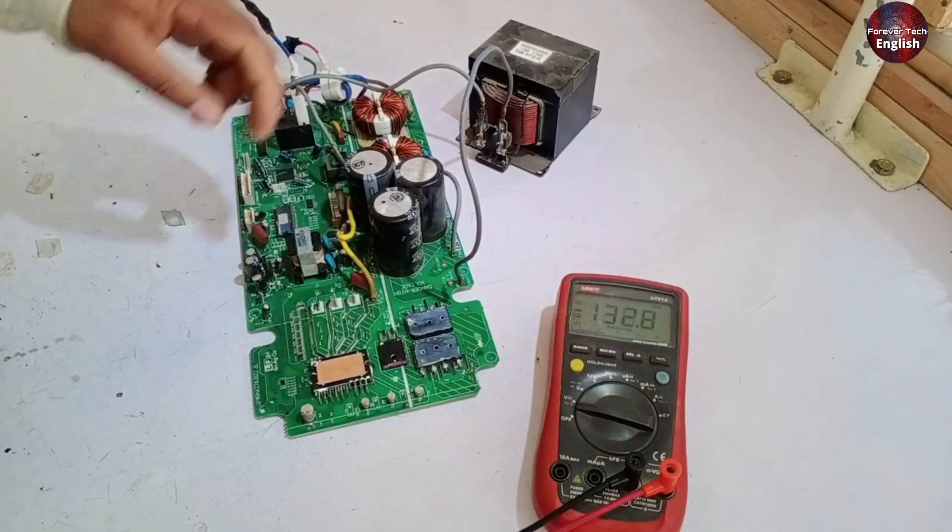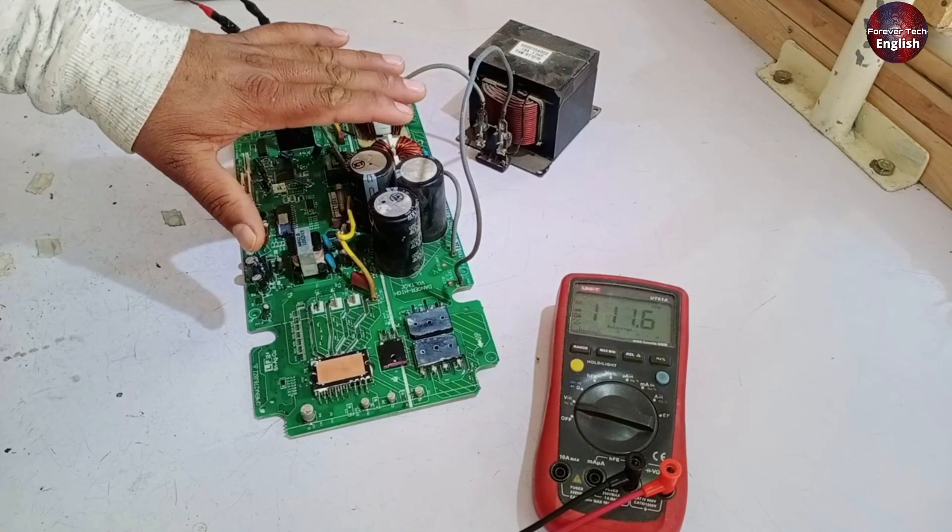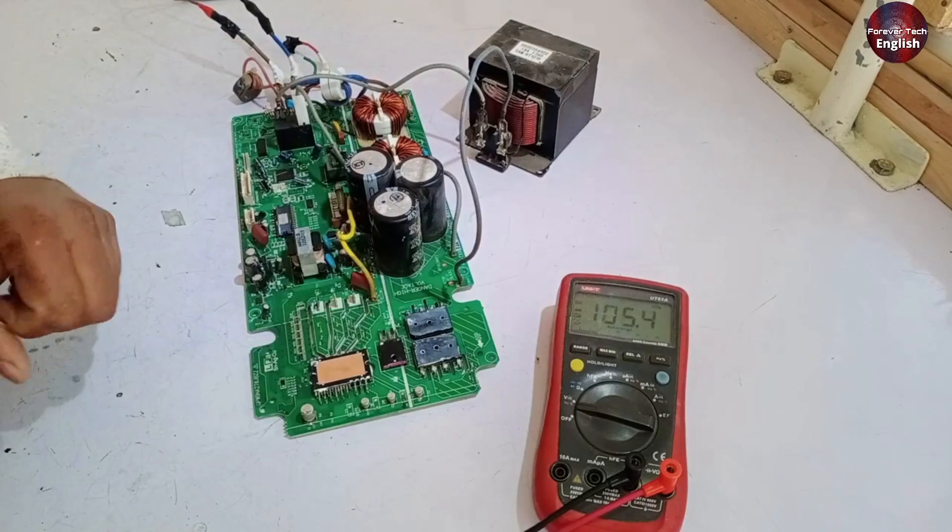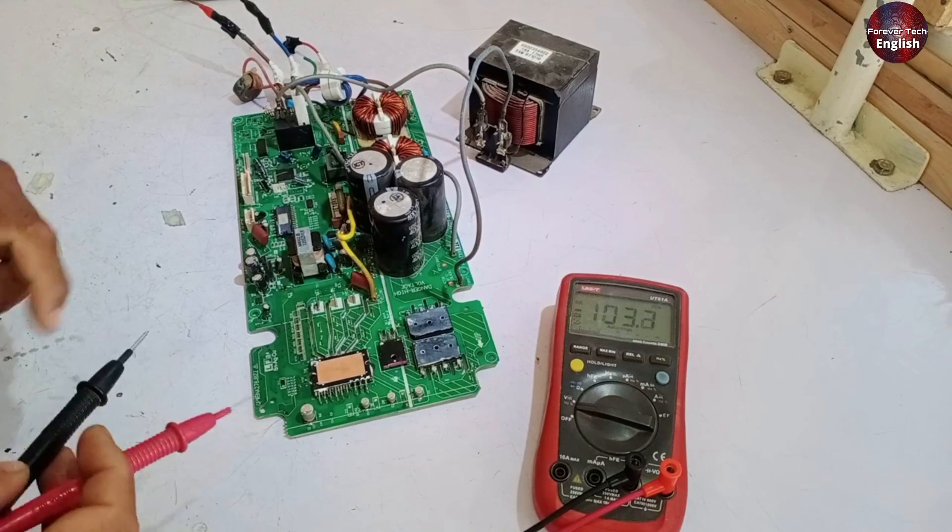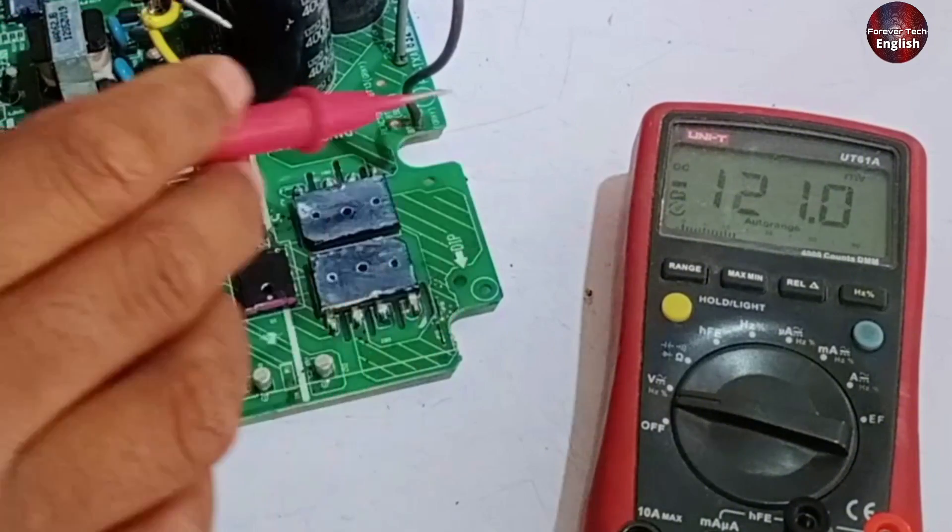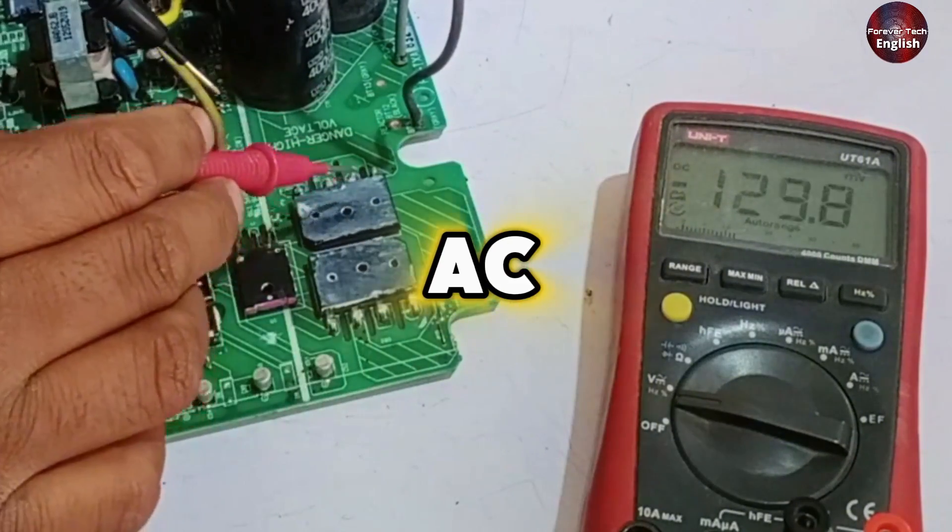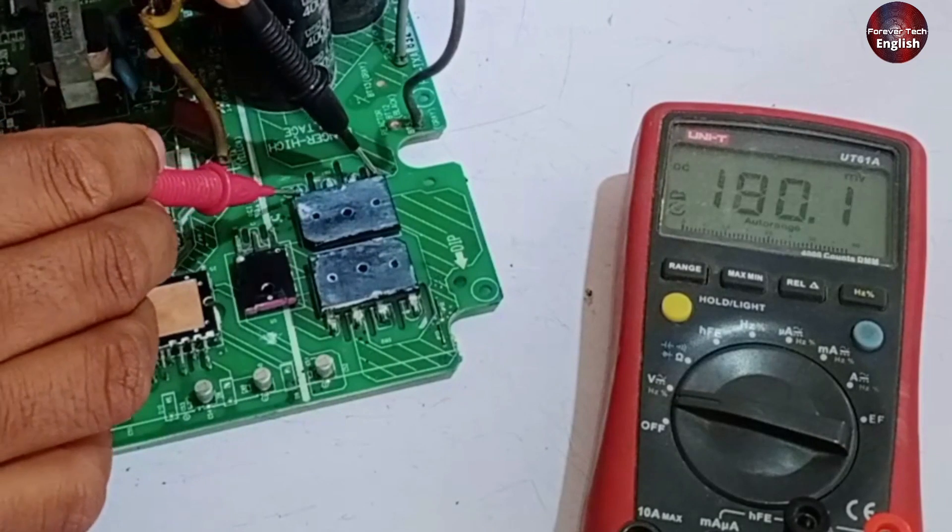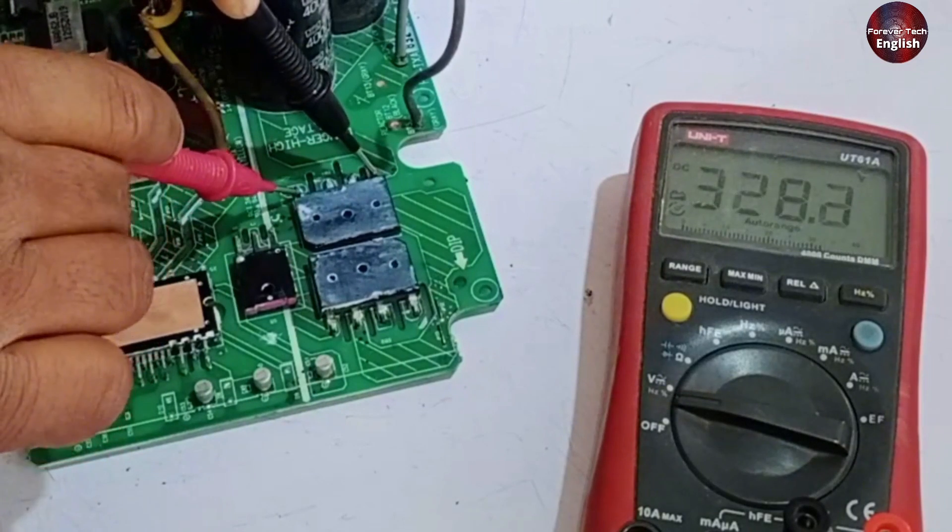Now let's talk practically. Look, I have set up the PCB here, and I will turn it on to show you how it functions. I have turned the PCB on, and you can see it's working. The rectifier is directly connected to the capacitors. What happens here is that when AC is converted to DC, the voltage can experience a peak increase due to the rectification process.